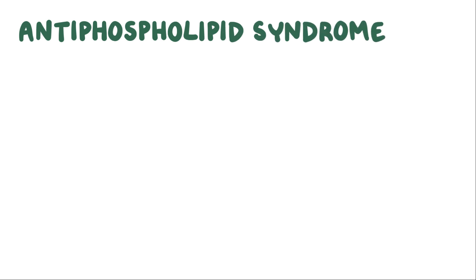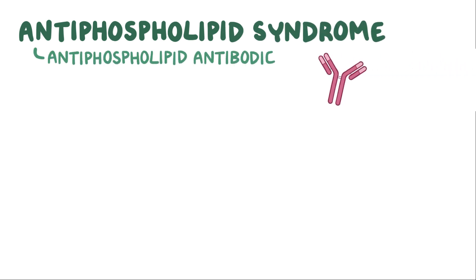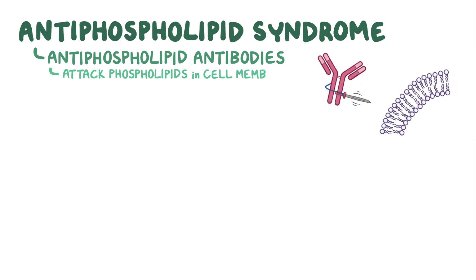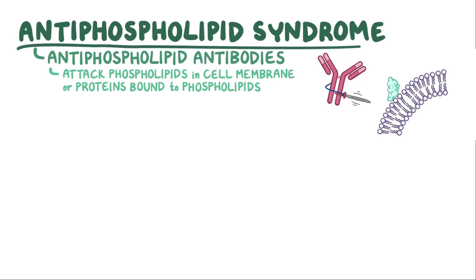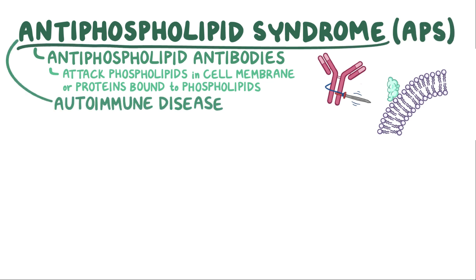In antiphospholipid syndrome, individuals produce antiphospholipid antibodies, which attack the phospholipids in the cell membrane of their own cells, or attack proteins that are bound to those phospholipids. So antiphospholipid syndrome, or APS, is an autoimmune disease.